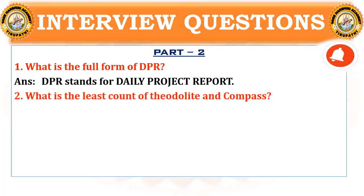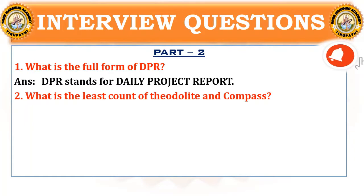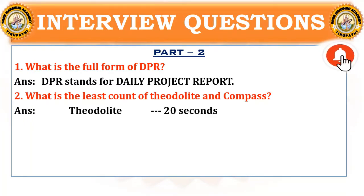Coming to the second question: What is the least count of theodolite and compass? Theodolite and compass are the major instruments used to perform surveying. The theodolite least count is 20 seconds, and the compass surveying least count is 30 seconds.